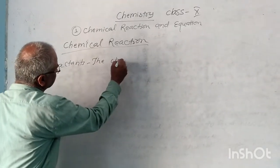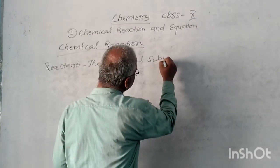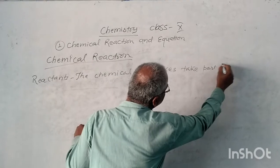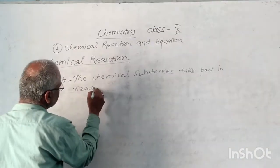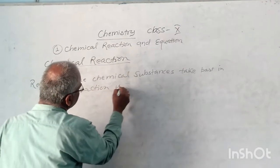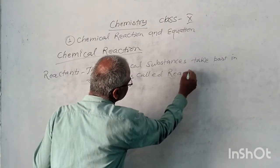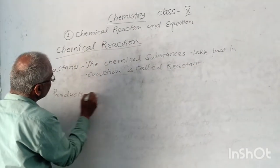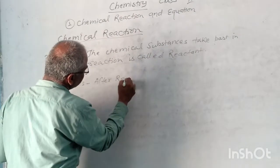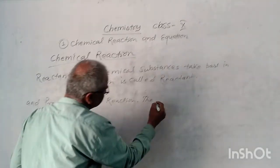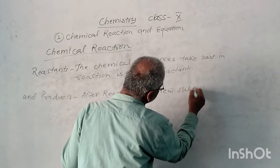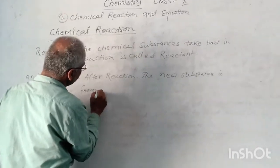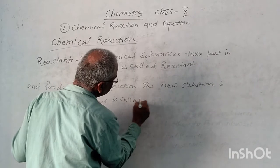Chemical substances that take part in a reaction are called reactants, and the new substance formed after the reaction is called the product.